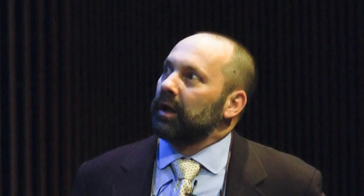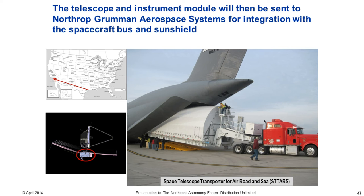After testing, the payload goes back into the C-5A and flies to Los Angeles, California, where the spacecraft is attached to it. Then we put it in a specially designed Ro-Ro ship — roll on, roll off — where this truck actually drives into the ship and parks. It leaves from Long Beach, California, goes through the Panama Canal to French Guiana to the launch center — a journey of about 6,900 nautical miles at 15 knots, taking 20 days. Then we launch it from there.